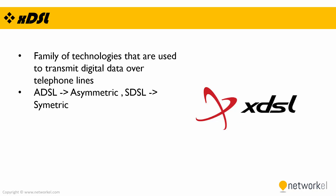Another popular broadband method is xDSL technology. xDSL is a family of technologies used to transmit digital data over telephone lines. We have two types of DSL: ADSL, which means asymmetric — meaning upload and download speeds are different — and SDSL, which means symmetric DSL.